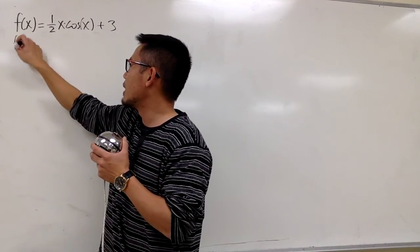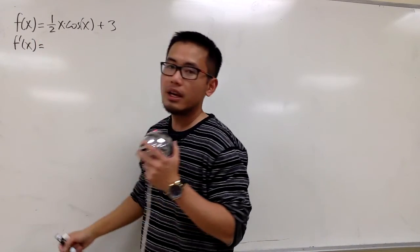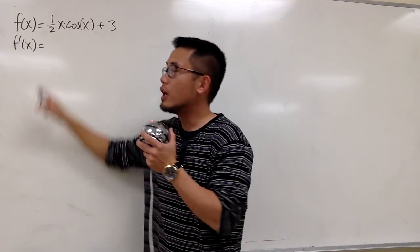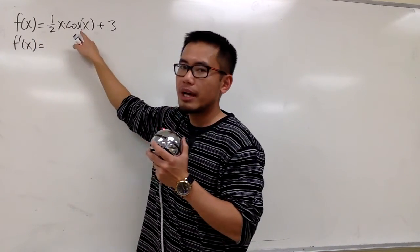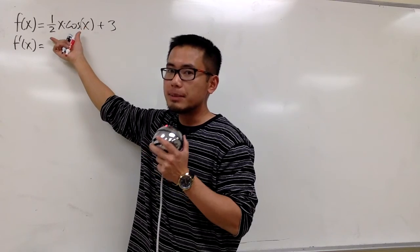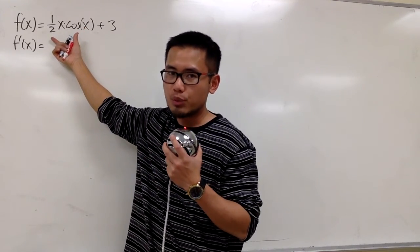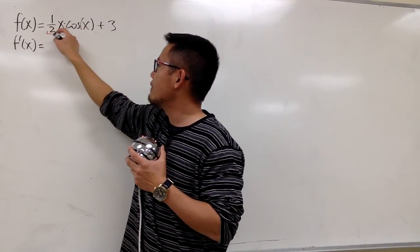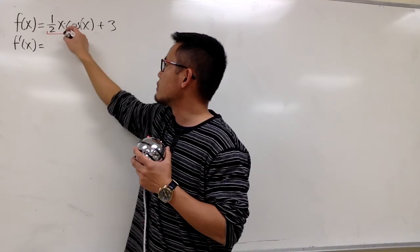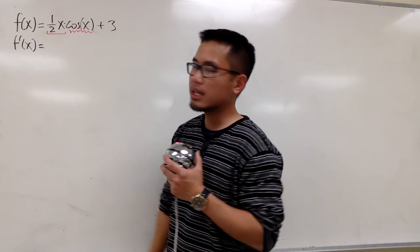Let me write down f' for the first derivative. As we can see, we have ½x times cosine x. This is the product of two functions, so we have to use the product rule. Let me label ½x to be the first function, and cosine x to be the second function.